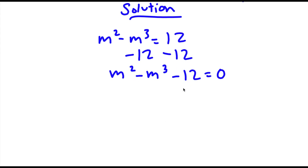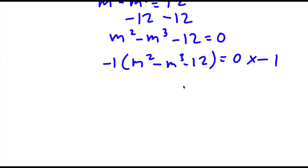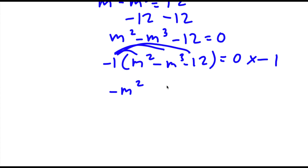Now I'm going to multiply both sides by negative 1. So I have negative 1 times m squared minus m to the power of 3 minus 12 is equal to 0 times negative 1. The negative 1 distributes with all our terms: negative 1 times m squared is negative m squared; negative times negative is positive, so negative 1 times negative m to the power of 3 is positive m to the power of 3; negative 1 times negative 12 is positive 12; and 0 times negative 1 is 0.